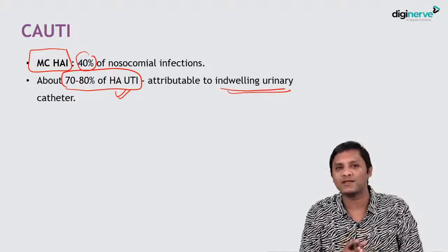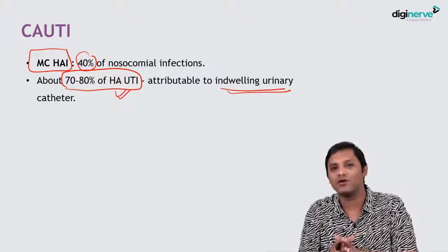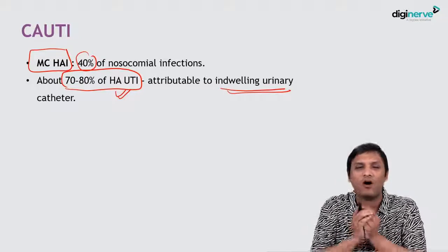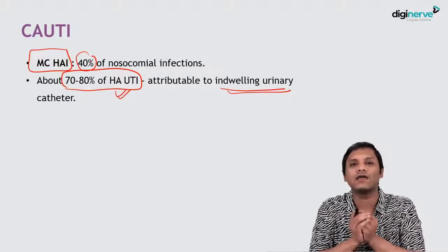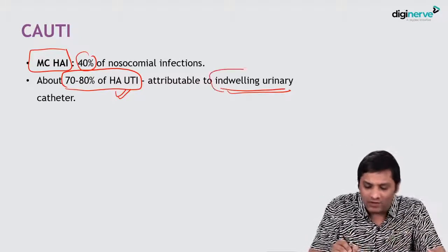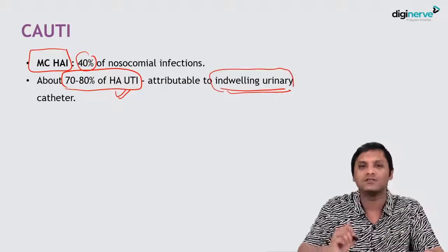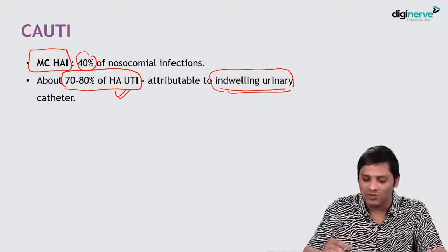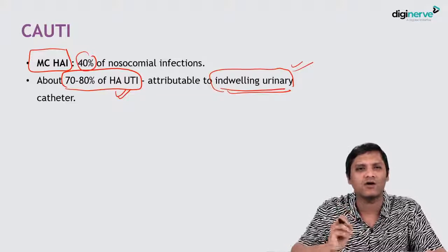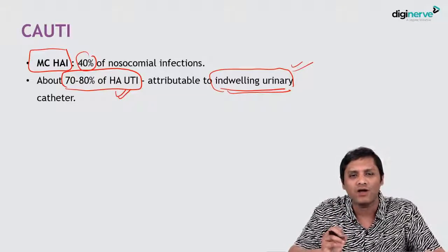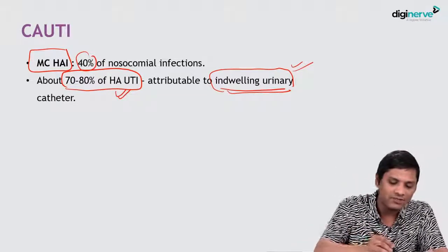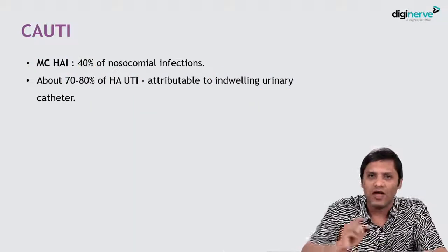In hospitalized patients, 70 to 80 percent of all UTI is attributed to the presence of a urinary catheter. Therefore, the presence of a urinary catheter is the single most important risk factor for hospital-acquired UTI. That is why we are going to discuss CAUTI now.